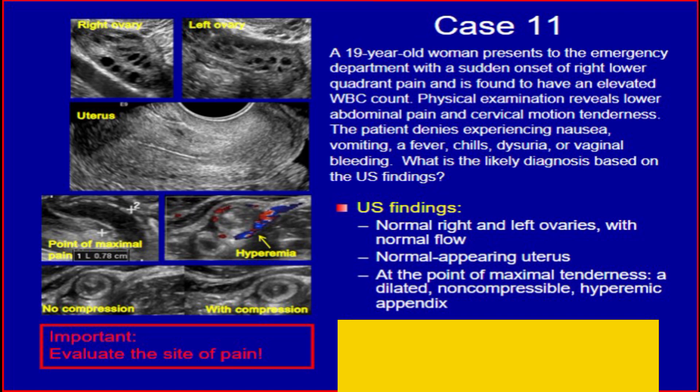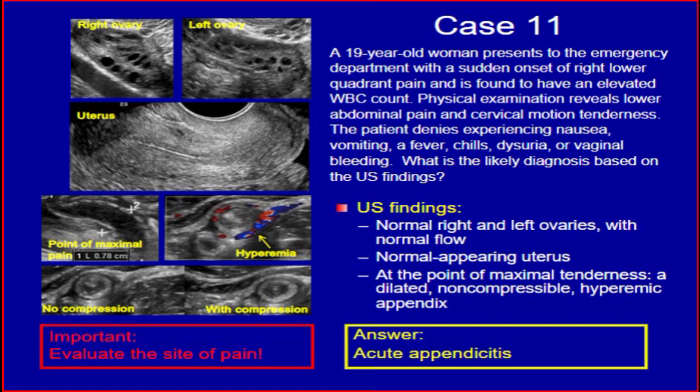Ultrasound findings: normal right and left ovaries with normal flow, normal appearing uterus. At the point of maximal tenderness, a dilated non-compressible hyperemic appendix. It is important to evaluate the site of pain. The answer is acute appendicitis.